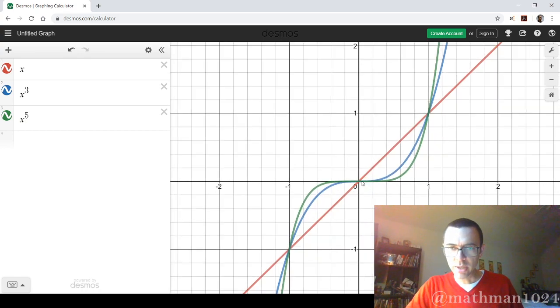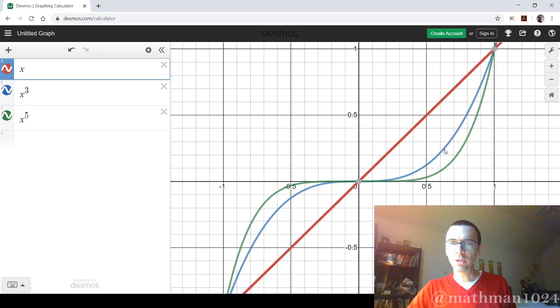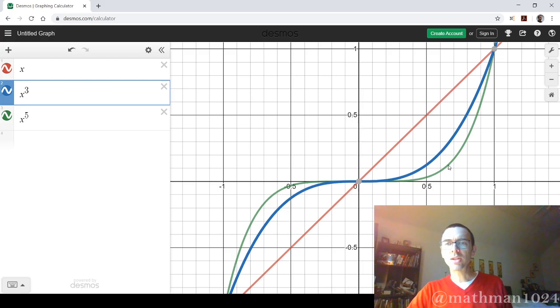In fact, if we zoom in, when we zoom in going from negative one to positive one, there's really not too much deviation with the graphs here. But you'll see that the smaller the power is, the higher it is. So here's x to the first, below that is x to the third, and below that is x to the fifth.